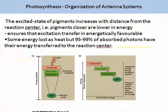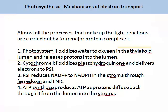This energy loss is both a problem for the plant and possibly for agriculture, as it shows the plant is not as efficient as it might be. Almost all the processes that make up the light reactions are carried out by four major protein complexes: photosystem II, cytochrome BF, photosystem I, and ATP synthase. In summary: photosystem II oxidises water to oxygen in the thylakoid lumen and releases protons into the lumen; the cytochrome BF oxidises plastohydroquinone and delivers electrons to photosystem I; photosystem I reduces NADP⁺ to NADPH in the stroma through the ferredoxin and FNR complex; and ATP synthase produces ATP as protons diffuse back from the lumen into the stroma.